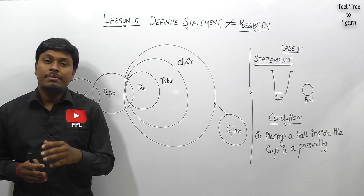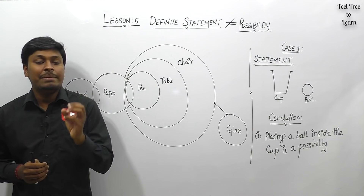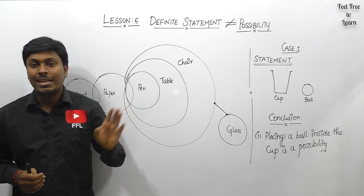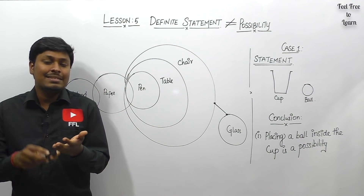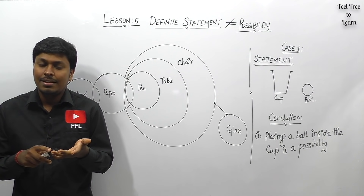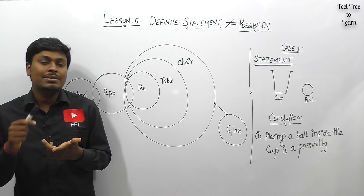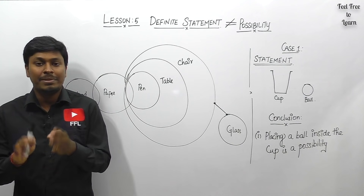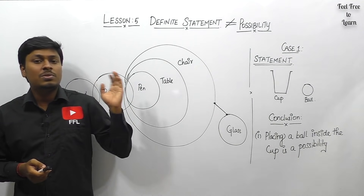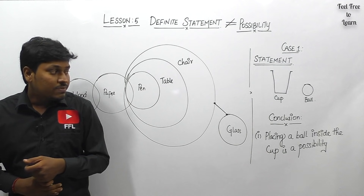Welcome to my YouTube channel. Today in lesson number five, we are going to see an important concept on the topic syllogism, which is called 'definite statement is not equal to possibility.' We have already posted lessons one through four covering some/all conclusions, no conclusion, possibility conclusion, and some-not conclusion, plus extra topics like river syllogism.